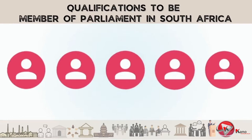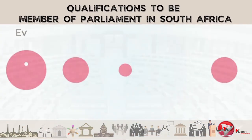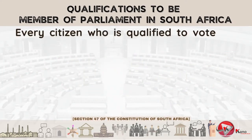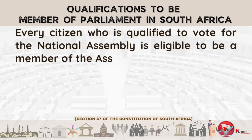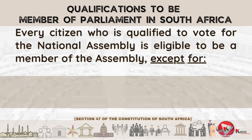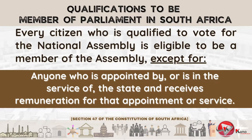Who qualifies to be a member of Parliament in South Africa? Section 47 of the South African Constitution provides that every citizen who is qualified to vote for the National Assembly is eligible to be a member of the National Assembly, except for the following: anyone who is appointed by or is in the service of the State and receives remuneration for that appointment or service. This excludes the President, Deputy President, Ministers, and Deputy Ministers, as well as other office-bearers whose functions are compatible with the functions of Parliament and such services have been declared.